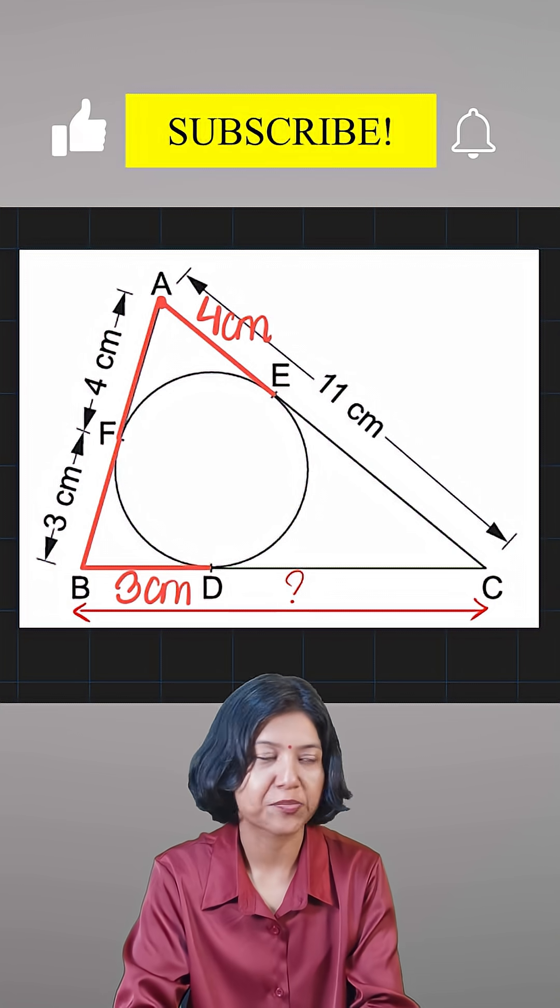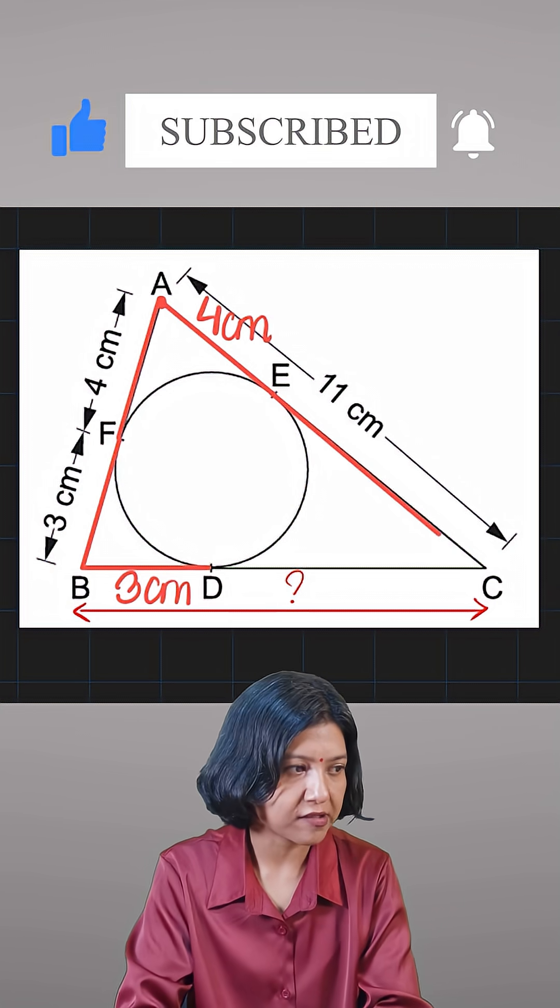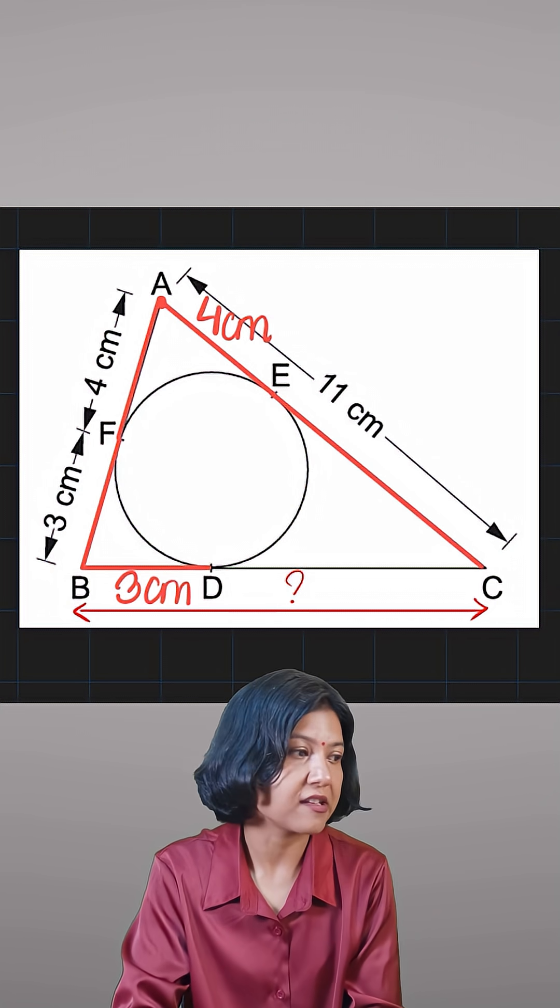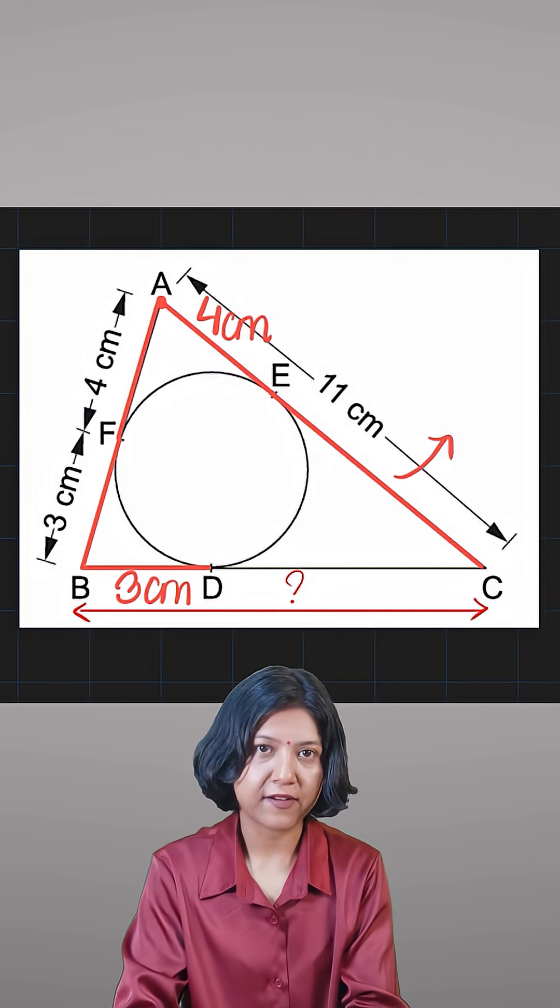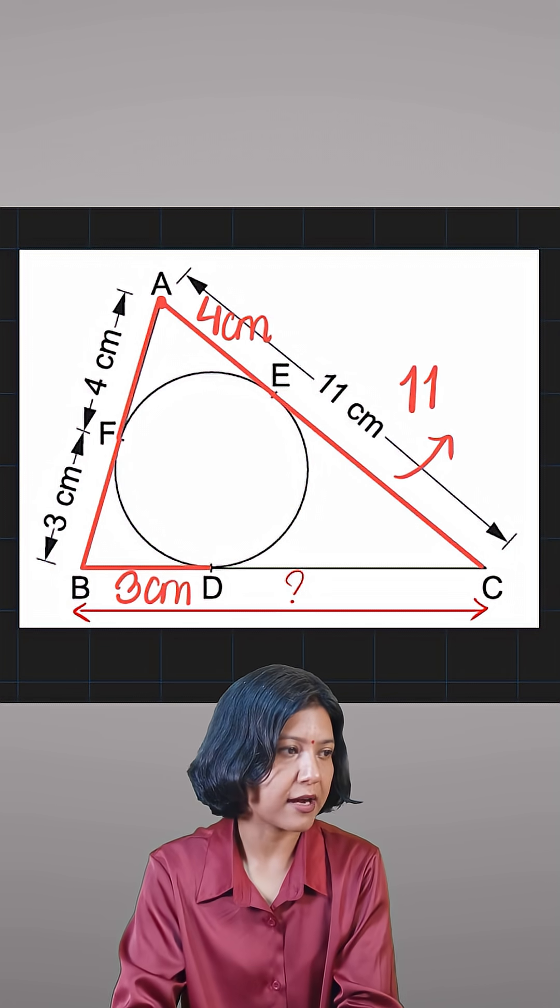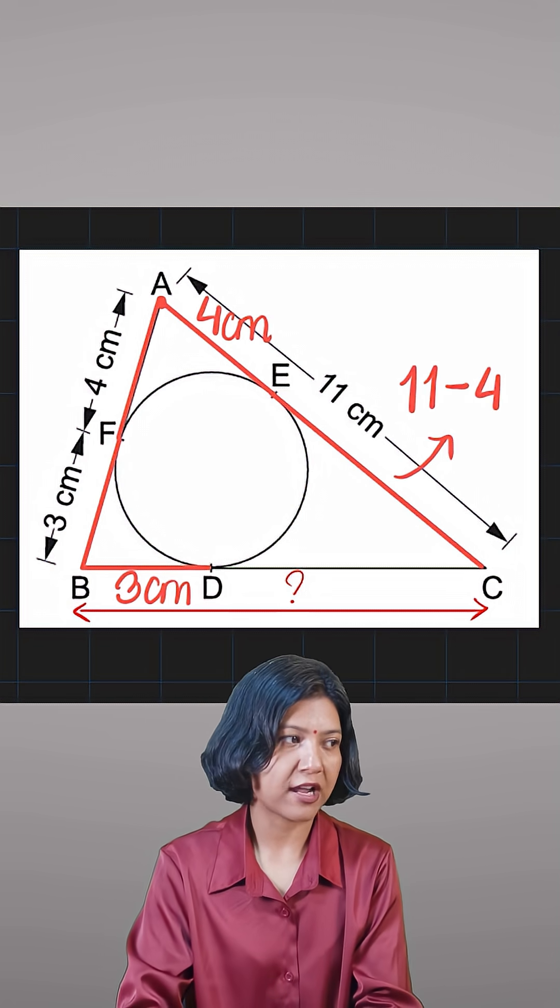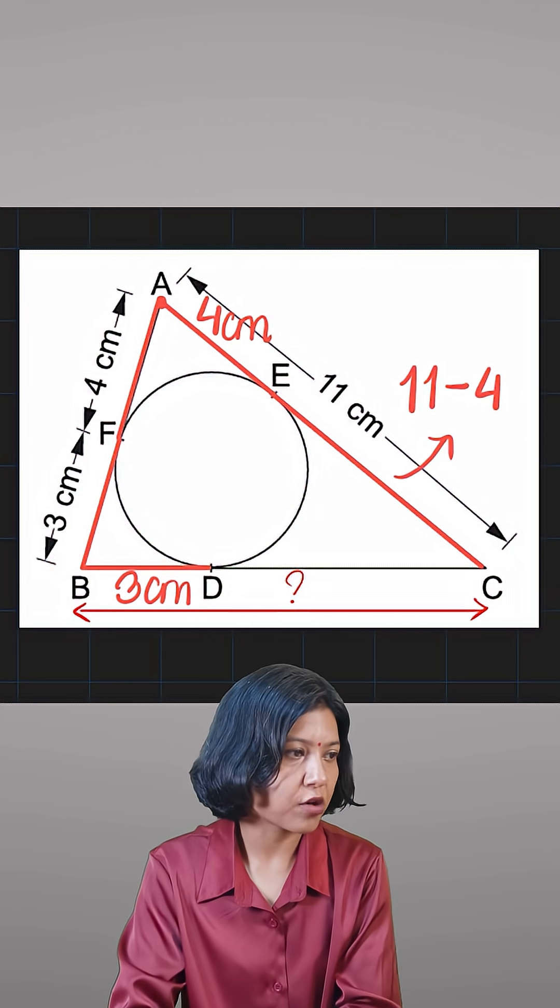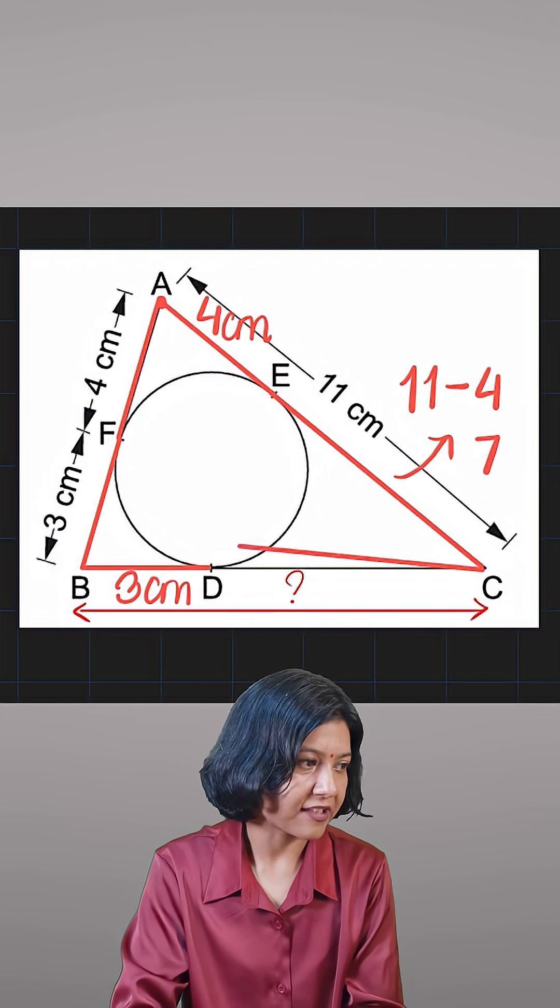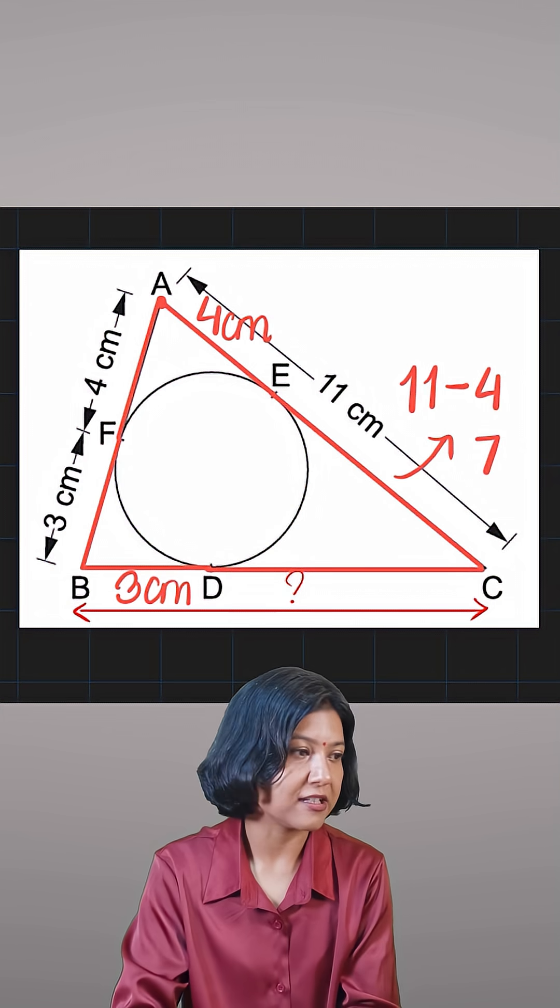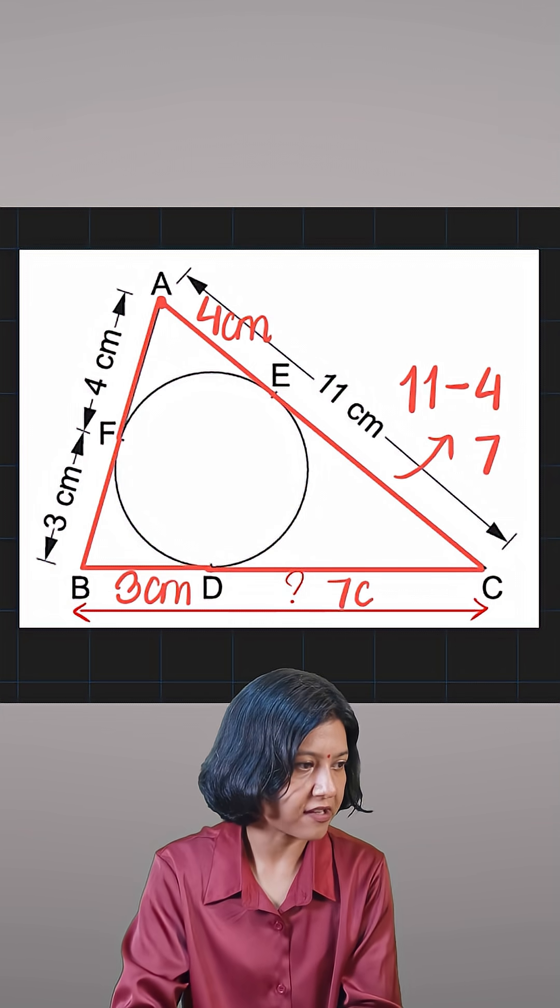Now let's consider the last pair. EC has to be equal to CD because they are both coming from the external point C. So EC can be found by simply doing 11 minus 4, because I took 4 as AE. So 11 minus 4 is 7. So whatever the length of EC is, the same length will be for CD, giving me CD has to be 7 centimeters.